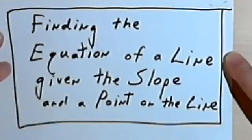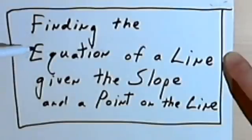This video is going to be about finding the equation of a line when you're given the slope and a point on the line. And actually there are two ways to do this. So what I'm going to do in this video is give you the way that I prefer, and then in a separate video I'll give you an alternate method.